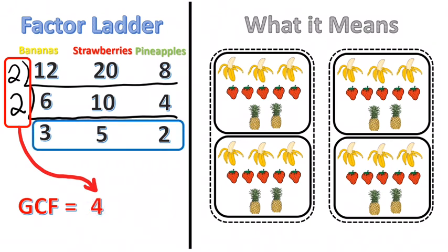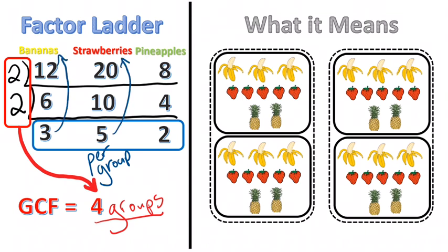The bottom numbers here are still your per group numbers. Even in the three example you can see if I made four groups then I would have 3 bananas per group, I would have 5 strawberries per group, and I would have 2 pineapples per group. So it even works for three numbers. It's a really neat trick. There's other things that the factor ladder can do but this is how you would use it for the GCF and how it applies to our grouping fruit example.